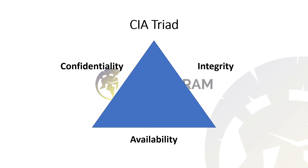In any given scenario, CIA should be present, but maybe if there's poor security in place, maybe only two will be present, maybe only one, and maybe none of these will be enforced. I want to give you an idea of how they can be present.